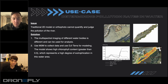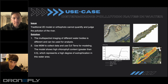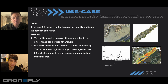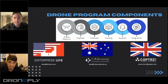Algae blooms reflect light that's bouncing off the sun — they're absorbing some and reflecting some of that back. Multispectral measures that reflectivity, so if there's an algae bloom, you're probably going to see it on multispectral much faster than you'd see it with your naked eye or just a standard camera.